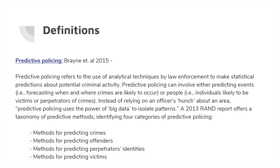This topic is actually pretty straightforward — it has about five words in the resolution. The only phrase you'll really need to define is predictive policing. This definition comes from Brain et al. 2015, and it's a very common definition you'll see in research. It actually originates from a 2013 RAND report and is used across a lot of literature.